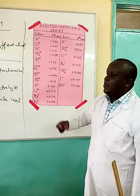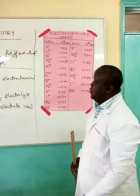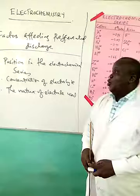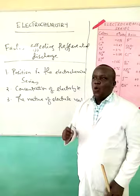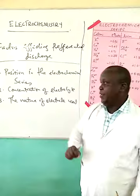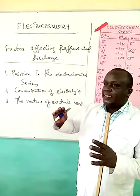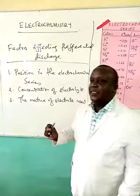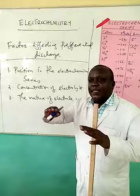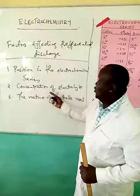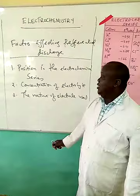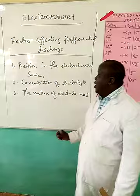Another factor that affects what is supposed to be discharged is the concentration of the electrolyte. We learned in our previous lesson, when we had an electrolytic cell with concentrated sodium chloride and another with dilute sodium chloride. With dilute sodium chloride, oxygen was produced at the anode. With concentrated sodium chloride, chlorine gas was produced at the anode, because the chloride ions had a relatively high concentration compared to hydroxide ions. So concentration of the electrolyte is another factor.